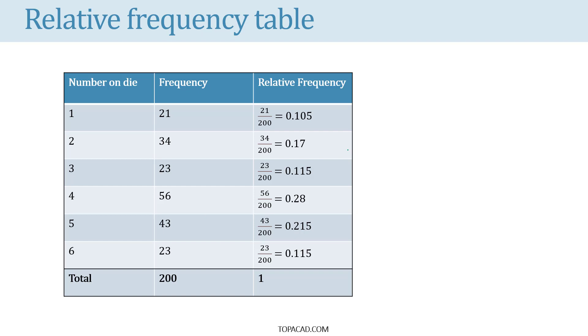Notice that if you add the relative frequency of each number showing on the die, it adds up to 1. Also, notice that the value of relative frequency should be always between 0 and 1.